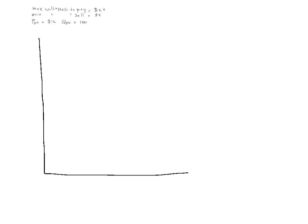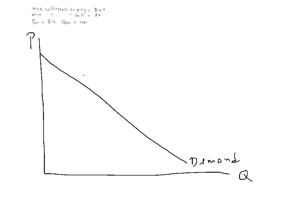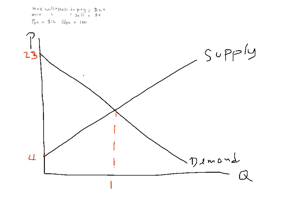You draw your graph with Q on the horizontal axis and P on the vertical axis, your demand curve and your supply curve — in an exam, write the full words, not just D or S, or you must explain what they stand for. Mark the maximum willingness to pay at $23, minimum willingness to sell at $4, equilibrium quantity QPC at 100 units, and equilibrium price PPC at $12.